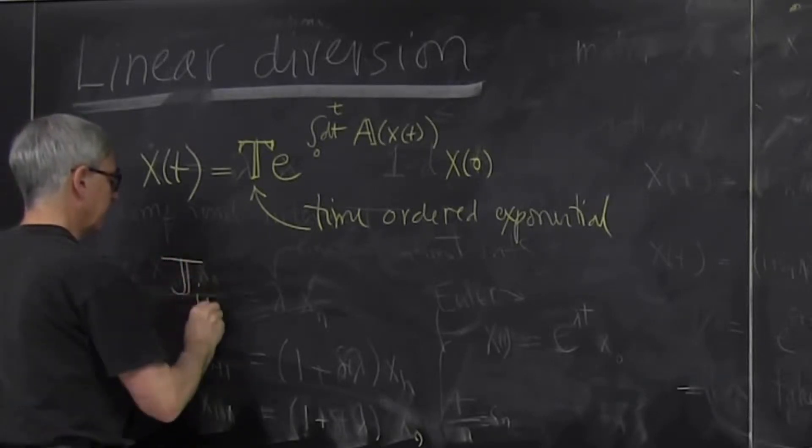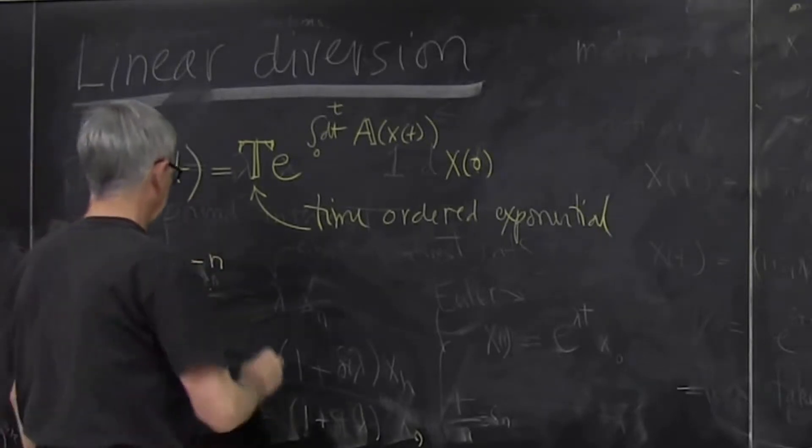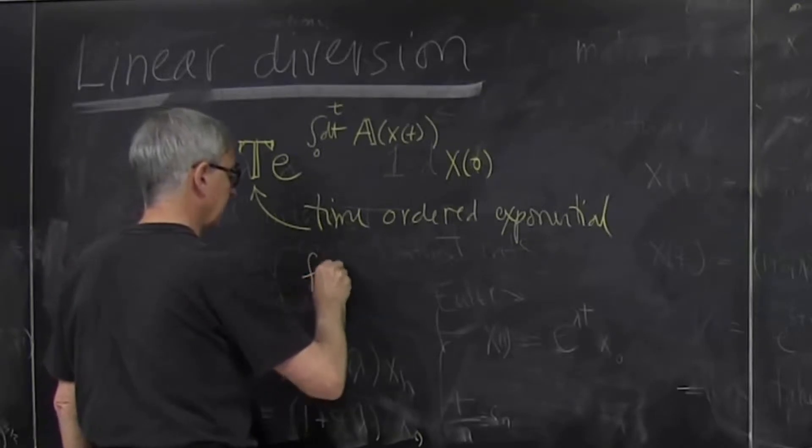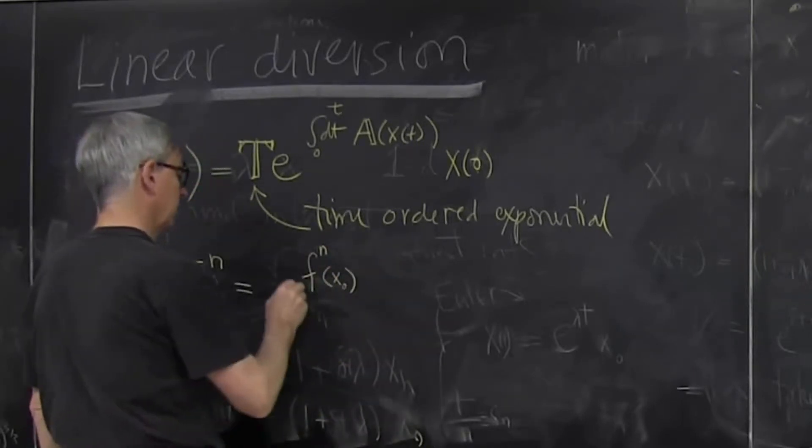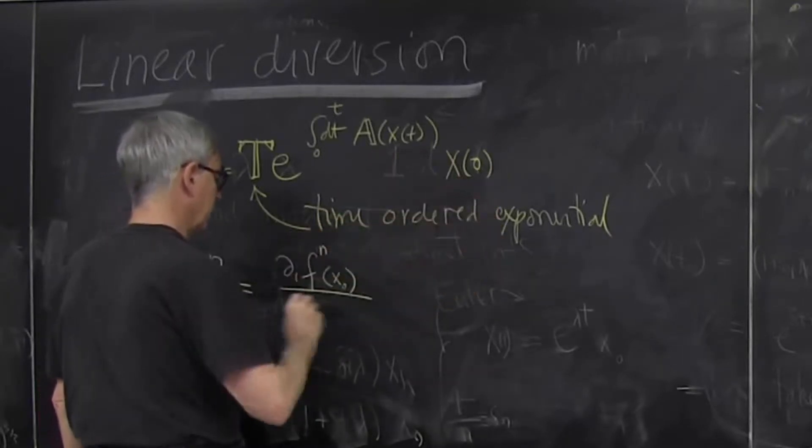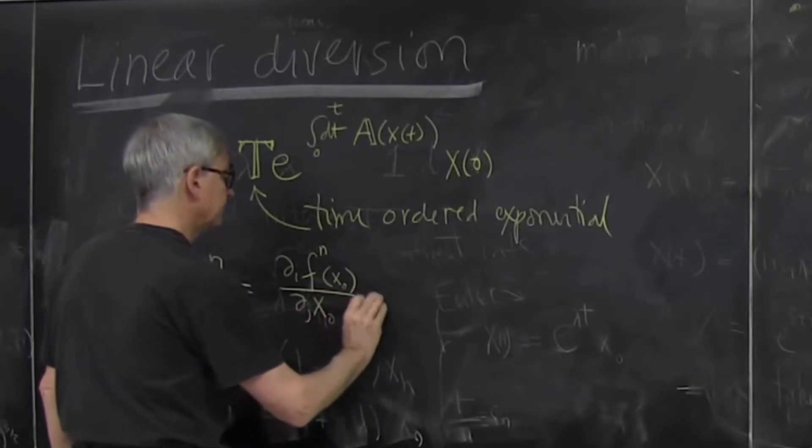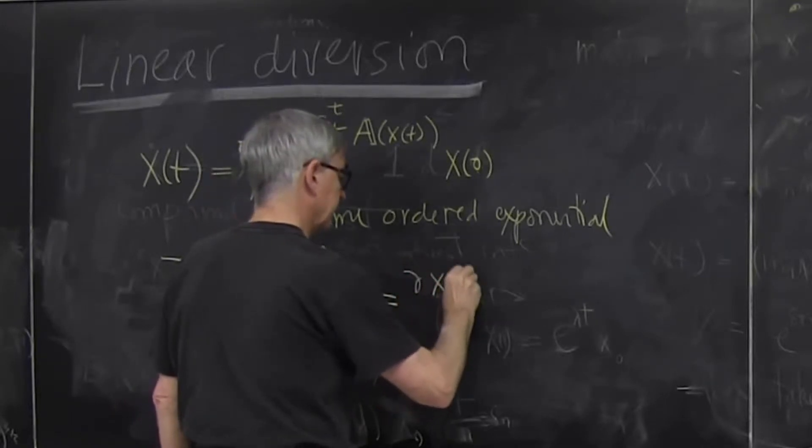So Jacobian_ij at discrete time, let's call it n, is defined as my map starting at x_0 going to n time steps forward. And how does it vary in direction i if I perturb initial condition in direction j? Or if you want to, you can write it as dx at time n.